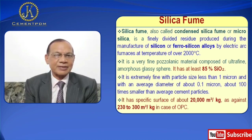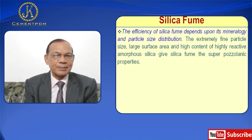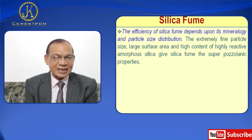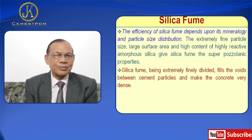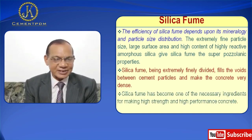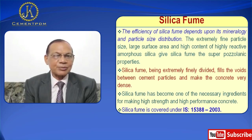Silica fume is about 100 times smaller than average cement particles. It has a specific surface of about 20,000 meters per kg, as against 230 to 300 meters per kg in the case of OPC. The efficiency of silica fume depends upon its mineralogy and particle size distribution. The extremely fine particle size, large surface area, and high content of highly reactive amorphous silica gives silica fume its superior pozzolanic property. Silica fume, being extremely finely divided, fills the voids between cement particles and makes the concrete very dense. Silica fume has become one of the necessary ingredients for making high strength and high performance concrete. Silica fume is covered under IS 15378-2006.